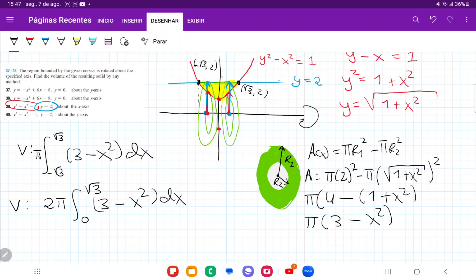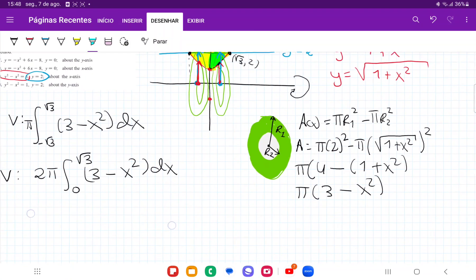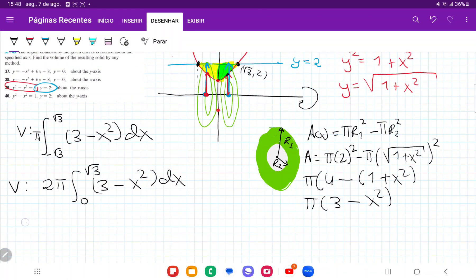And once more, I did twice from 0 to root 3 because this section right here, 2 times the section here is going to be the whole area. And so now all I have to do is I have to integrate it. So this is 2 pi times 3x minus x cubed over 3 and all of this evaluated from 0 to root 3, which is equal to 2 pi times, we don't need to worry about 0 because that just disappears. We're just plugging in root 3.